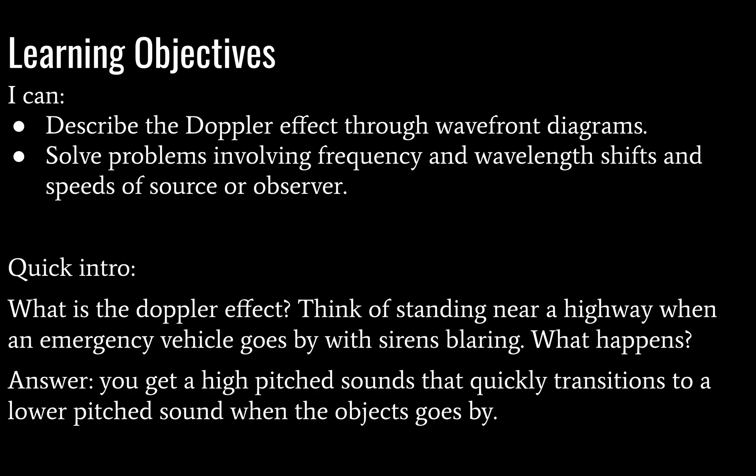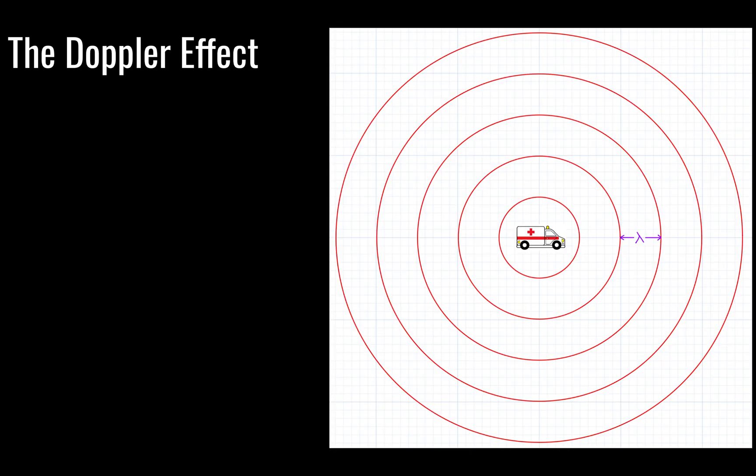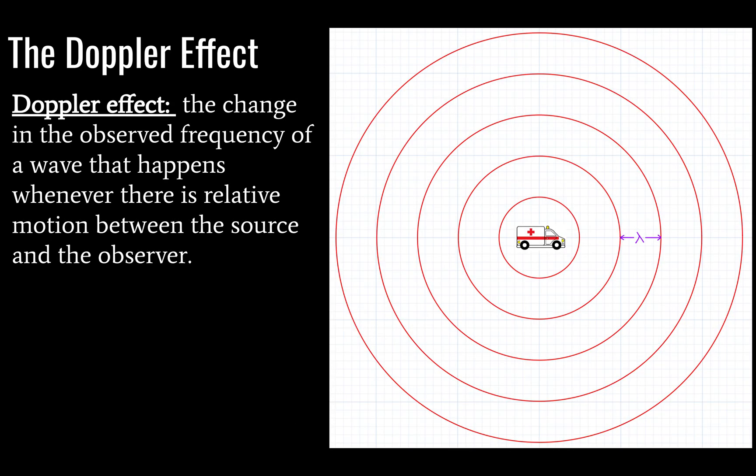And it sounds just a little bit like this. Okay. So that, of course, is a train rather than an emergency vehicle, but you should all be very familiar with this. Even the tires from the vehicle going by will make a similar transition from a high frequency to a low frequency as they go by. So that's the Doppler effect, in a nutshell. And if you want a definition, there it is. The change in the observed frequency of a wave that happens whenever there's relative motion between the source and the observer.